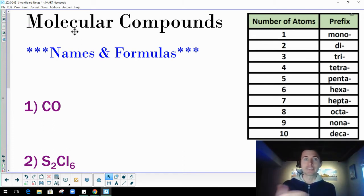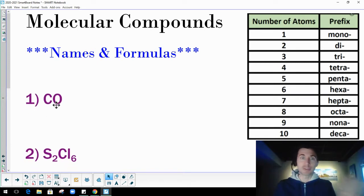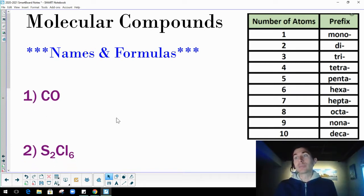So we did ionic compounds already. Those are metals and non-metals, or cations and anions involving the transfer of electrons. Molecular compounds are, to me, much easier. They're much easier to name and write the formulas of. It's really pretty much what you see is what you get.